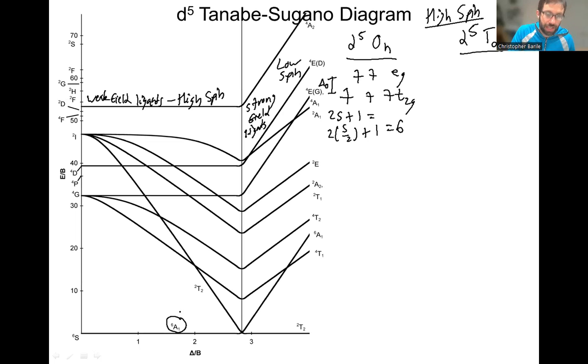Each spin-up is worth plus one-half, so that gives us an S of five-halves, so two times five-halves plus one equals six, and we call this a sextet, which is why we have sextet A1 there. This would be the ground state, therefore it would be actually sextet A1G. We have to add a G because this is the proper term symbol for octahedral.